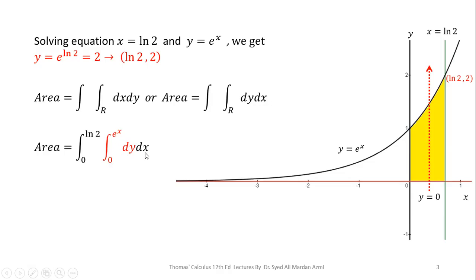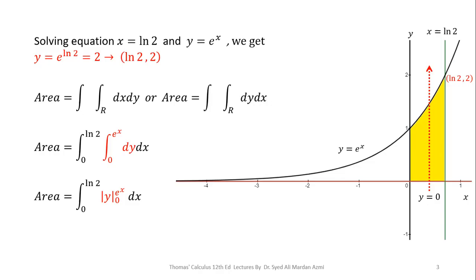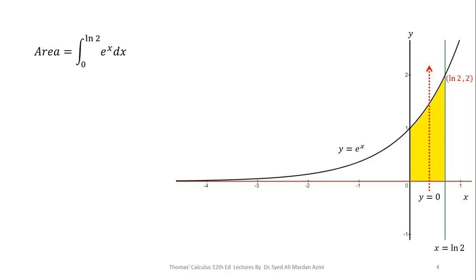For the outer variable, we check the range of the region along the x-axis, which is 0 to ln(2). So the outer limits are 0 to ln(2). Evaluating the inner integral: the integral of dy is y, evaluated from 0 to e^x. Applying the Fundamental Theorem of Calculus (upper minus lower limit), we get the integral from 0 to ln(2) of e^x dx. The integral of e^x is e^x itself, evaluated from 0 to ln(2).